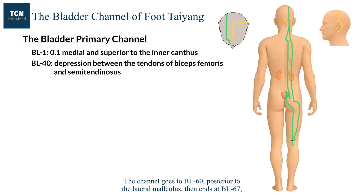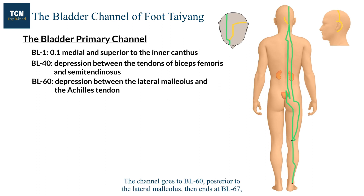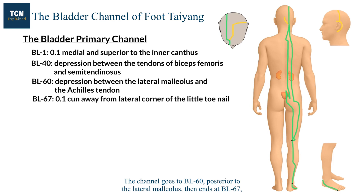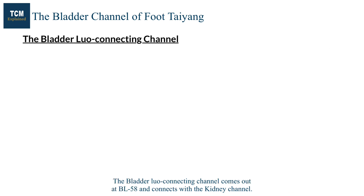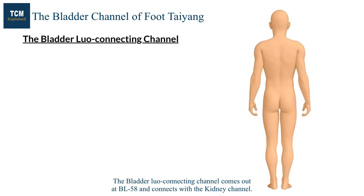The channel goes to bladder 60, posterior to the lateral malleolus, then ends at bladder 67 at the lateral side of the little toe, meeting with the kidney channel. The bladder luo connecting channel comes out at bladder 58 and connects with the kidney channel.